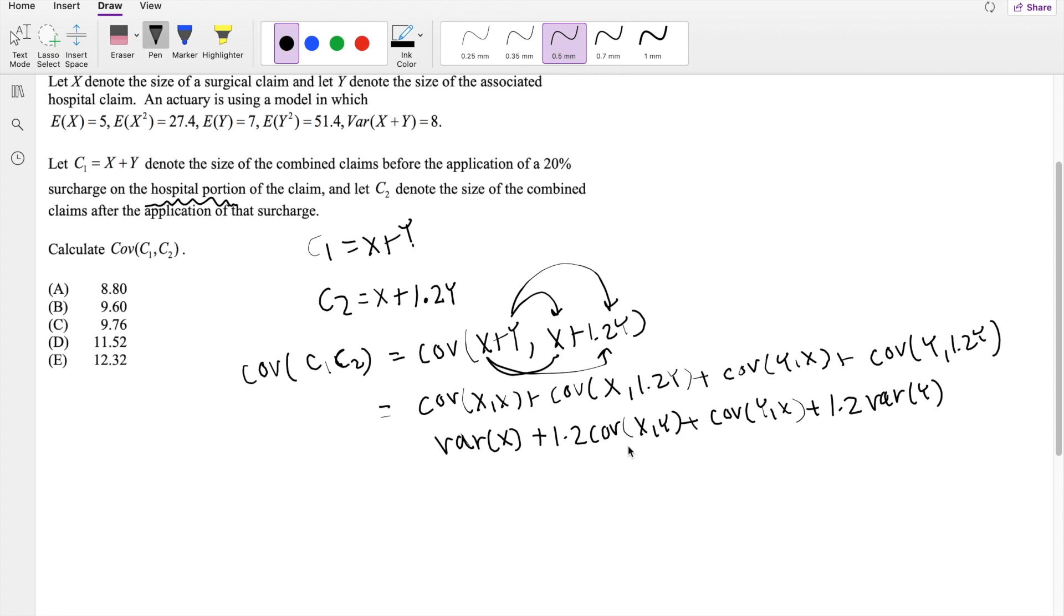And we also can put these two together because X and Y and Y and X, when you're talking about covariance, which is the relationship between these two variables, it's interchangeable. So we can finally simplify this to 2.2, because there's like an invisible one in front of this. 2.2 covariance of X and Y plus 1.2 variance of Y plus variance of X.